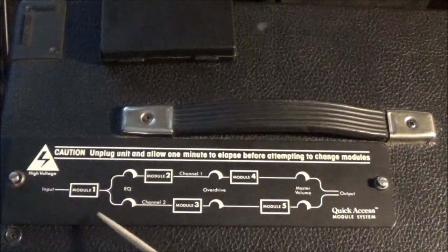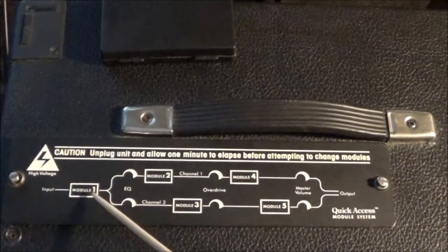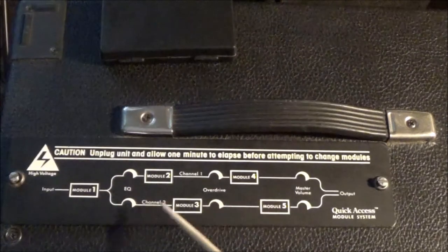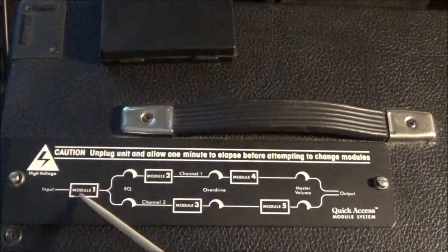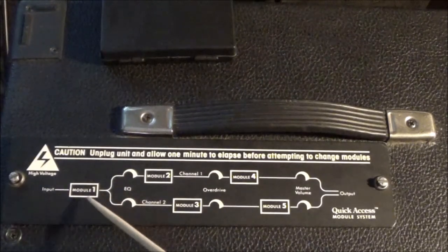Module 1 is common to both channels, so whatever you put here affects both channels. Probably the most important thing is to think, well, what do I want in channel 1? Do I want a classic module here, a normal module?